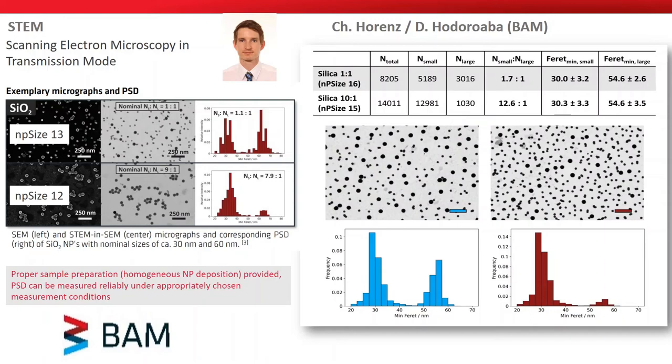Results are also shown for NP size 15 and 16. The determination of polydispersity is challenging, and BAM developed a proper sample preparation protocol.